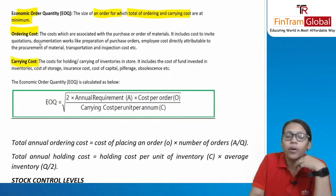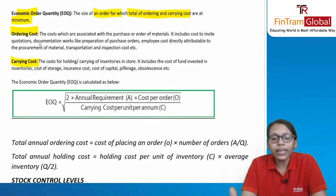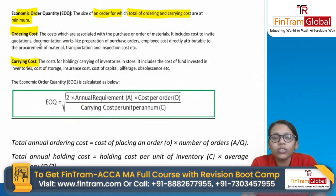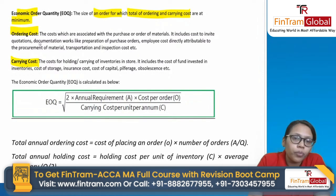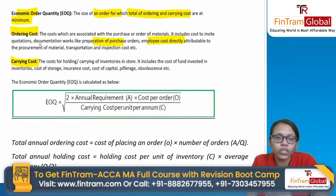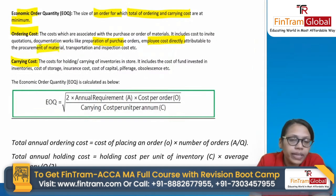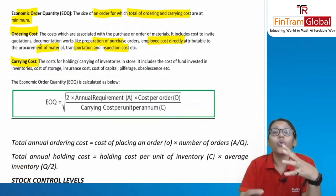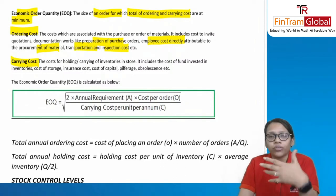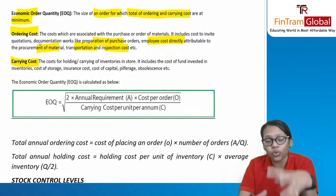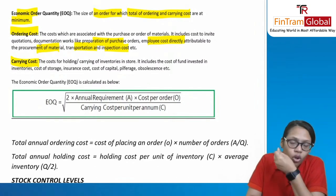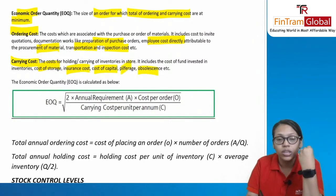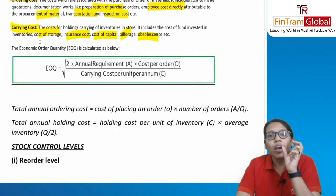Ordering cost is the cost incurred to place an order: transportation, inventory inspection, purchase order documentation, employee costs in procurement, and transport inspection. Carrying (holding) cost is the cost to hold inventories in the warehouse until consumed by the production department, including cost of capital invested in inventory, storage cost, insurance cost, and pilferage/obsolescence. The EOQ formula is: √(2 × annual requirement × cost per order ÷ carrying cost per unit per annum).